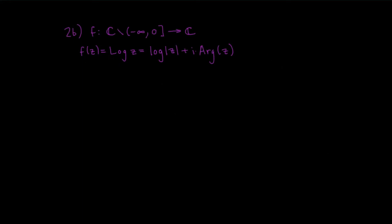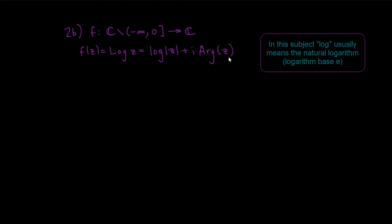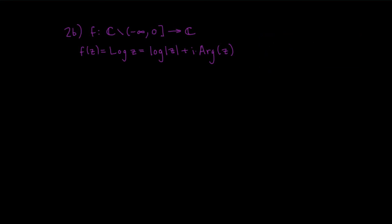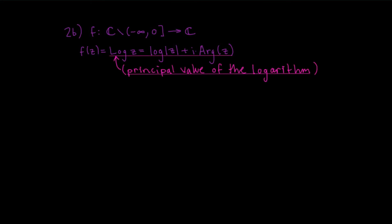Now I'll define an inverse function of the exponential. Define Log(z) with a capital L to be ln|z| + i·Arg(z), where ln|z| denotes the natural logarithm of the real number |z|. The domain is restricted to ℂ minus the negative real axis and 0: we exclude 0 because ln(0) is undefined, and we cut the negative real axis to ensure continuity. This function is called the principal value of the logarithm.